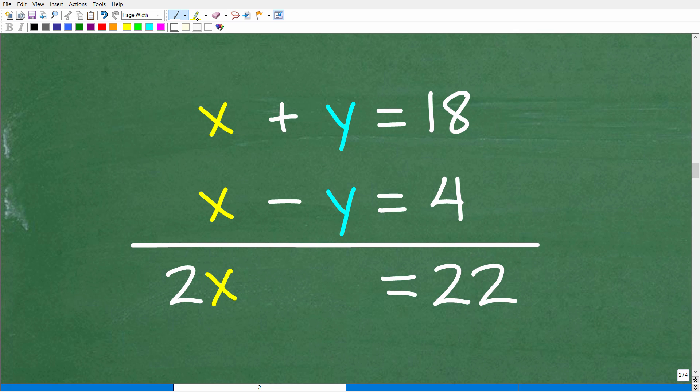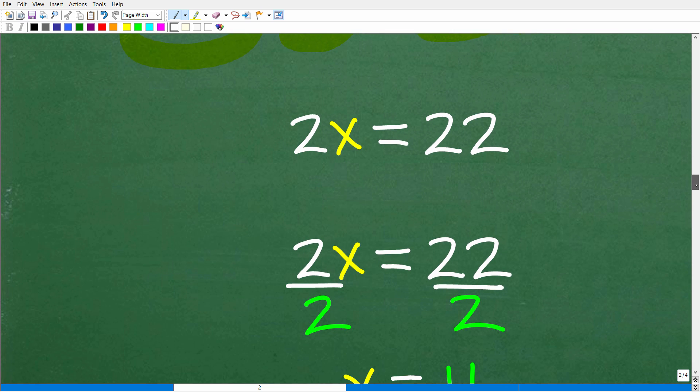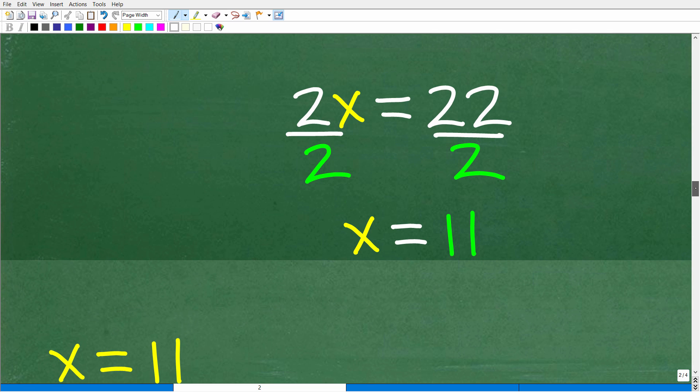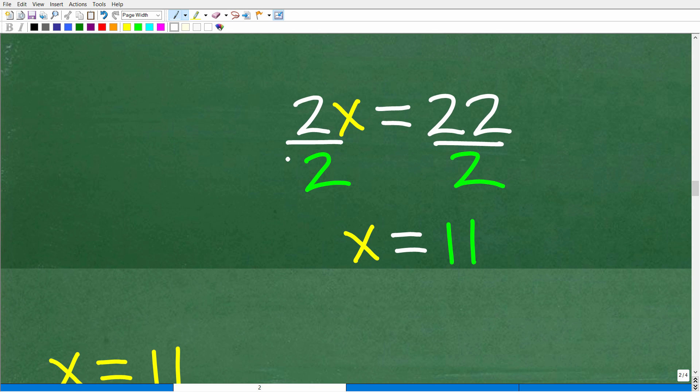Okay, so we're like, all right, we can get rid of the y's by using the linear combination or elimination methods. We're going to add down in a column manner. X plus x is two x, positive y plus a negative y is zero. We don't need to write that. 18 plus four is 22. So now we have one equation, two x is equal to 22, and it's going to be super easy to solve this one equation with one variable. All we have to do is divide both sides of the equation by two. So two x equal to 22, divide both sides by two, x is equal to 11.